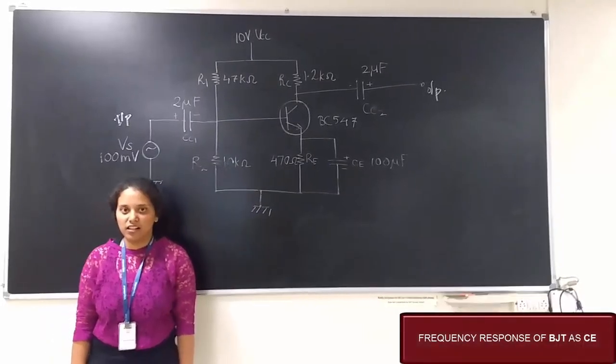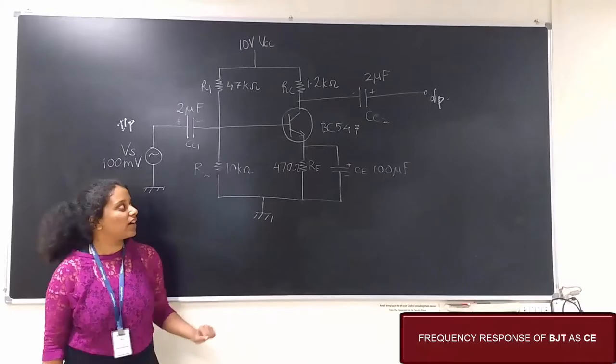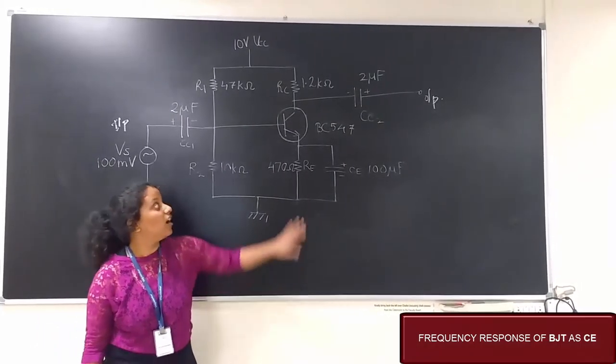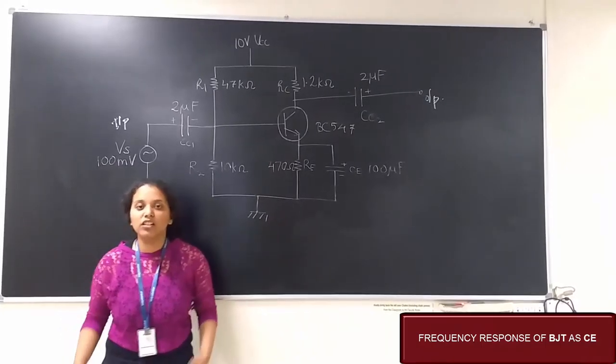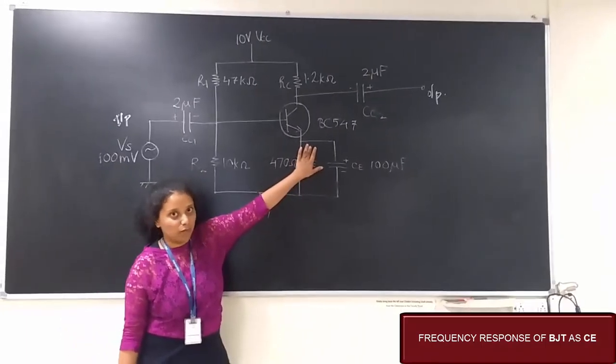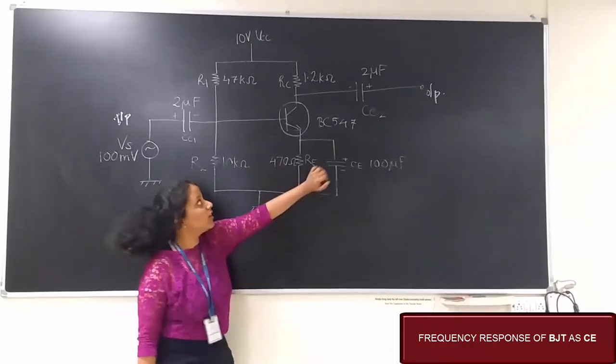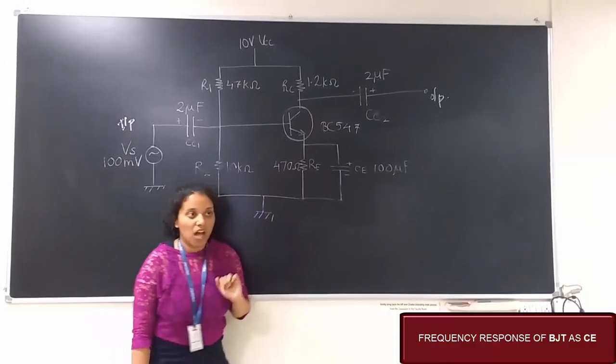Welcome to Analog Electronics II Lab. In this practical, we are learning about the frequency response of a BJT as a common emitter amplifier. As you know, in common emitter, the emitter is grounded, input is given at the base, and output is taken out at the collector.